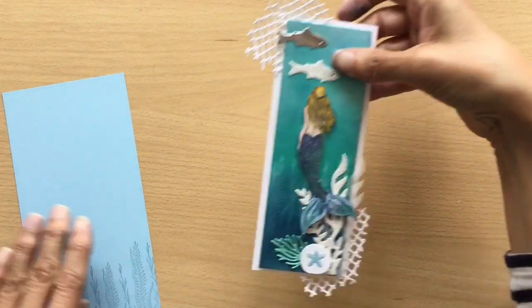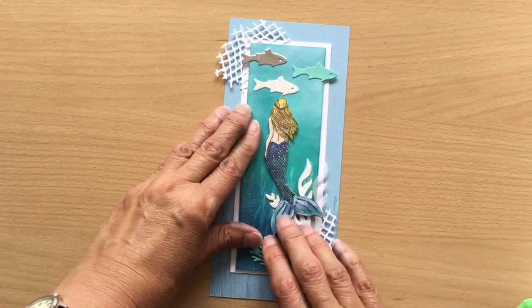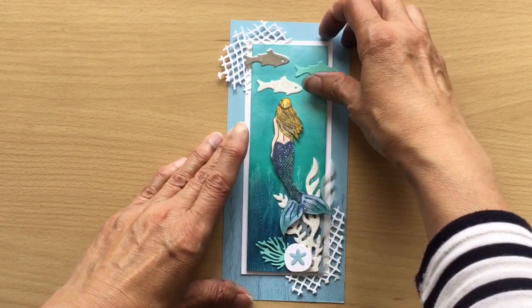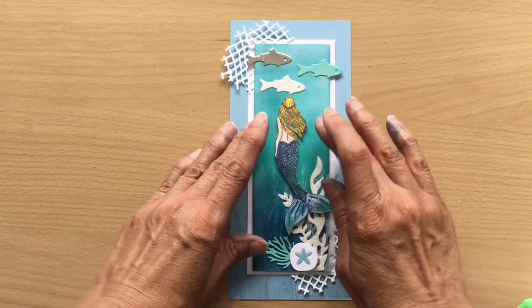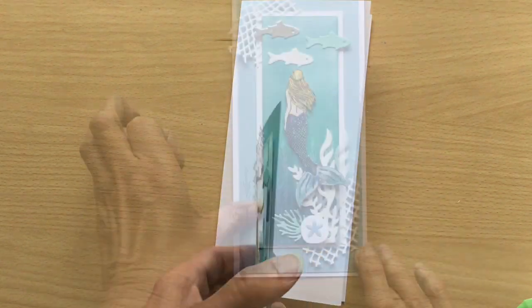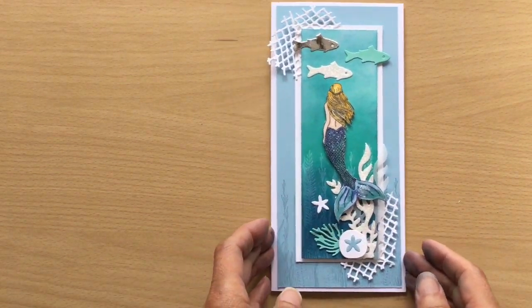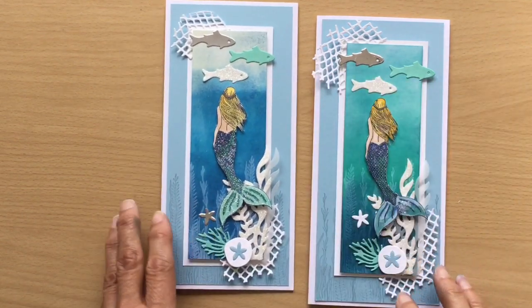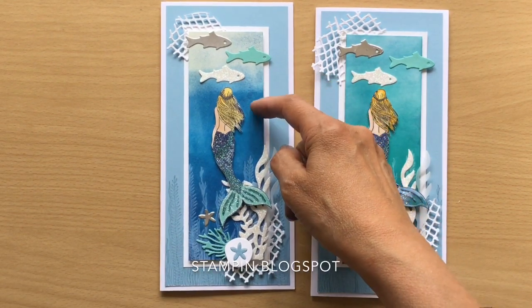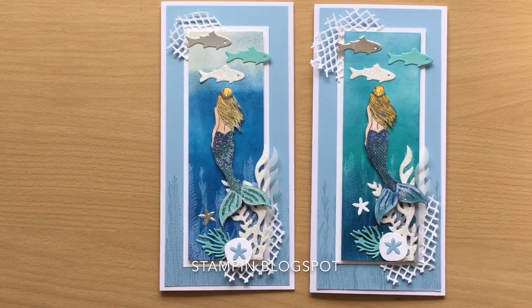This would have looked nice with a darker background as well. Maybe Bermuda Bay would have looked good. Then I'm just going to stick this onto the front of her card base. I've just added a little starfish there, and I'm going to show you one that I made before. Both very similar. Although on this one, the background I use Pacific Point in the middle, Pool Party at the top, and Night of Navy down the bottom. So otherwise they're pretty similar.